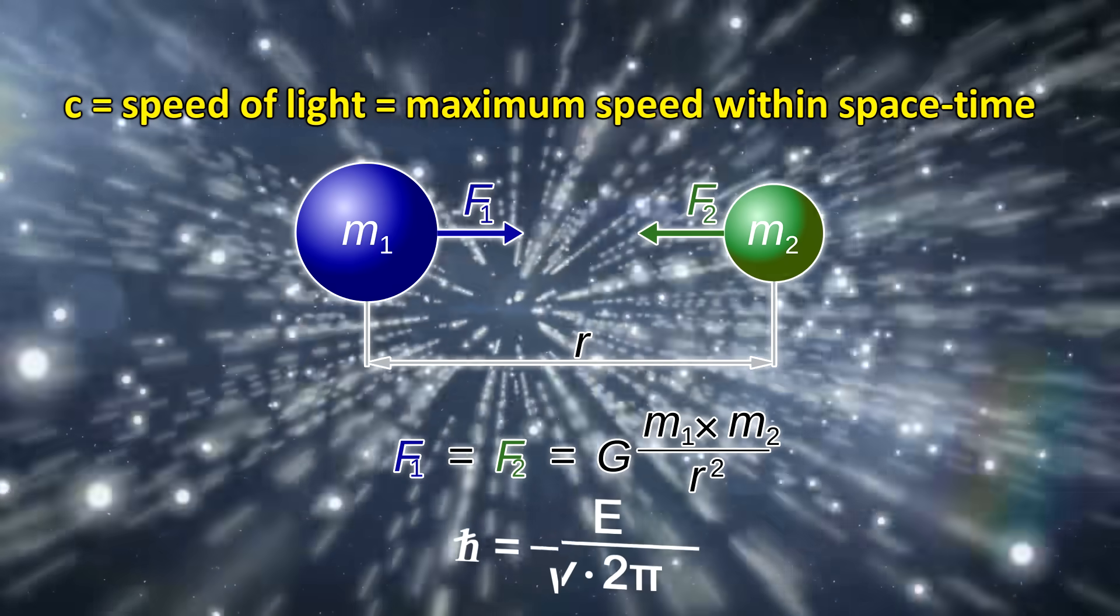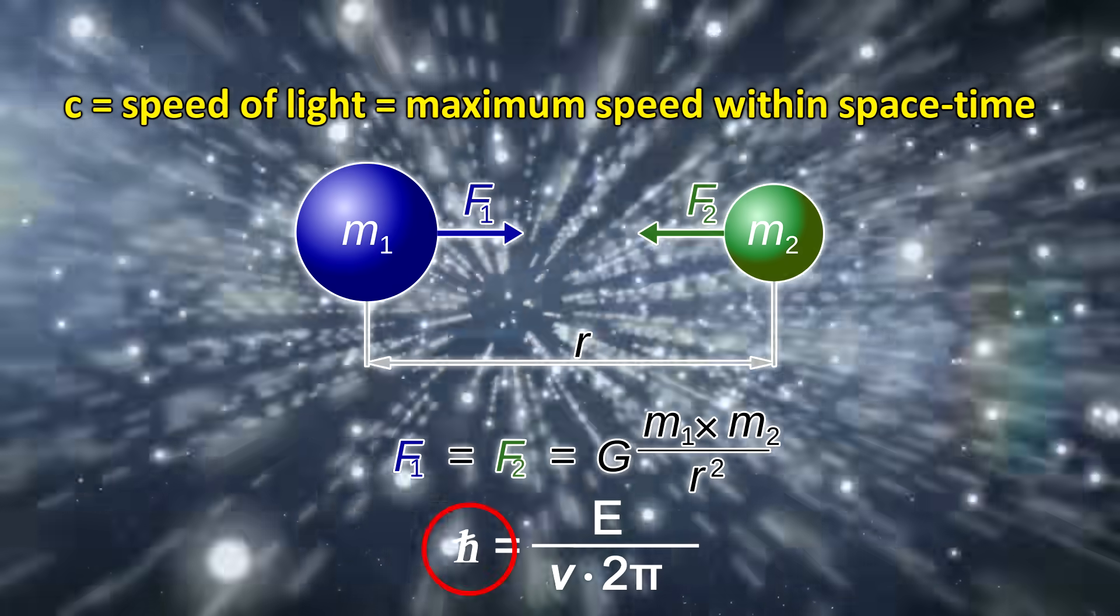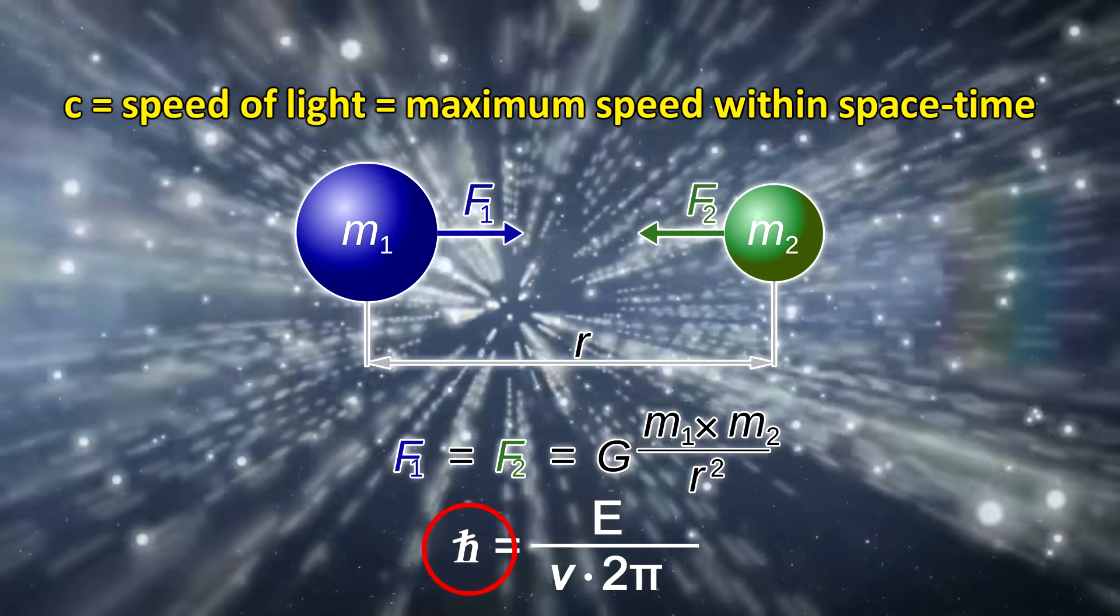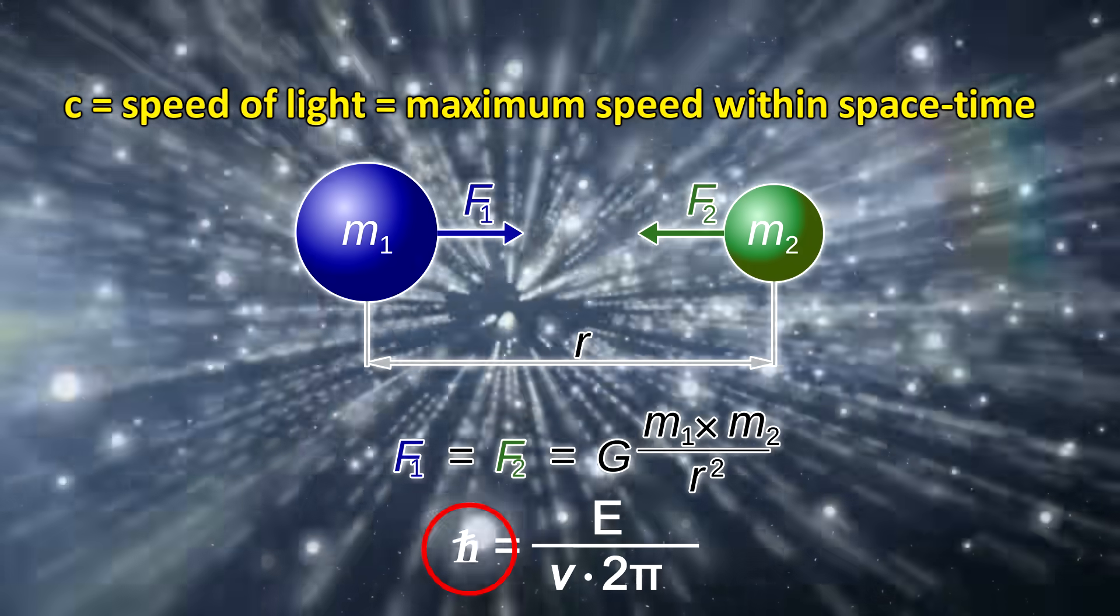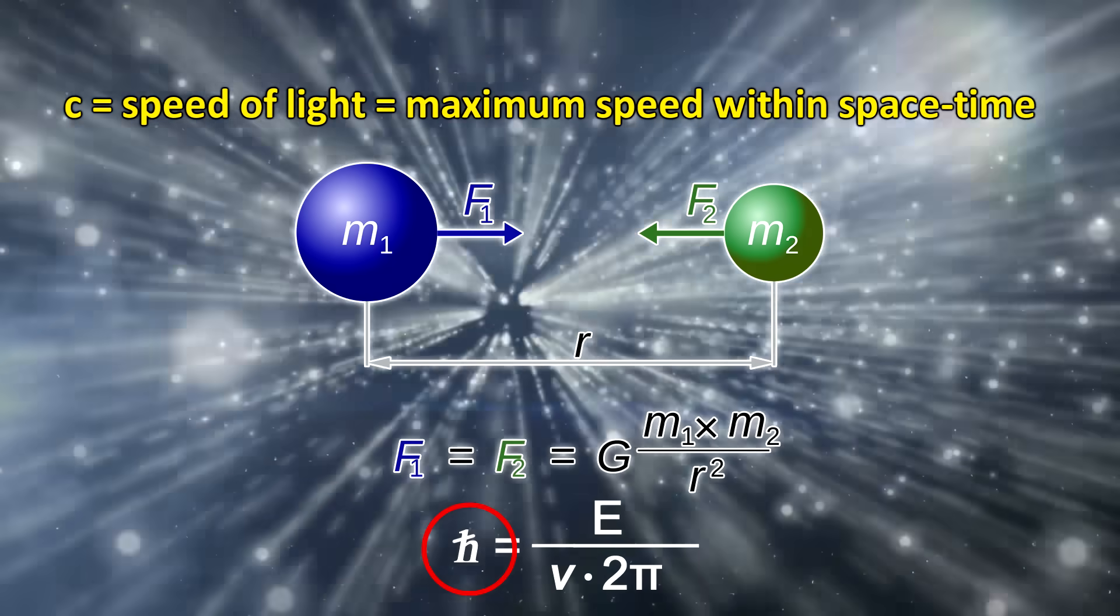And the reduced Planck constant, h-bar, which links how much energy a photon carries depending on its electromagnetic frequency, defined by this equation. These are really the only constants that define the fundamental properties of the universe, and all its contents.